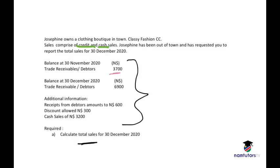The balance at 30 November 2020 is 3,700 — this will be your opening balance. At the end of November we had 3,700, meaning at the beginning of December that becomes the opening balance. Your opening balance for the current month will always be your closing balance for the previous month.